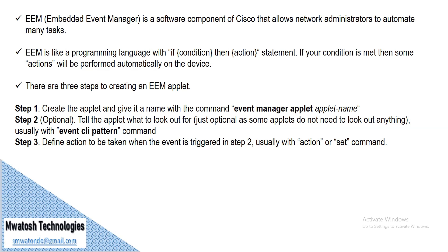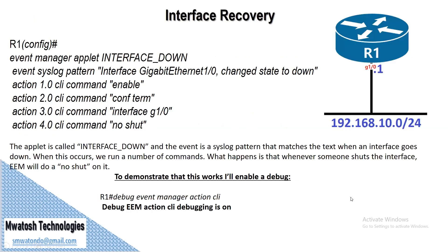There are three steps to creating an EEM applet. Step one: create the applet and give it a name with the command 'event manager applet name'. Step two, which is optional, tells the applet what to look out for — usually with the command 'event cli pattern'. Step three: define the action to be taken when the event is triggered, usually with 'action' or 'set' commands.